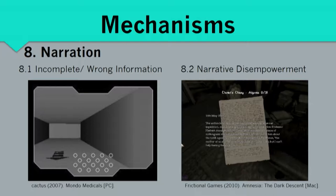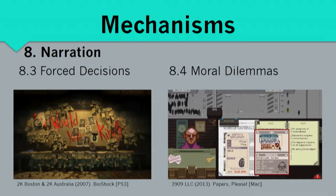There's also narrative disempowerment — you see something or read something and you can't do anything about it. It can be a cutscene, a document, or something happening outside of your area of control. Sometimes this happens not on purpose — in a cutscene something happens which you wouldn't have done if you could control your avatar; it's often not intentionally disempowering, but accidental. Then there are forced decisions, like in BioShock, where at the end you find out you've been brain-controlled the whole time. And there are moral dilemmas, like in Papers, Please, where you basically have to decide: am I going to earn enough money to get treatment for my sick son, but then separate this man from his family — or let him through and risk losing my job entirely?